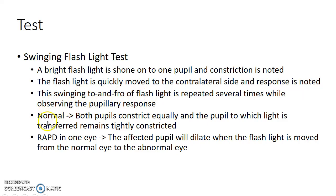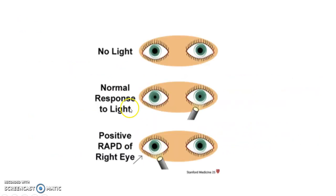In normal persons, both pupils constrict equally and the pupil to which the light is transferred remains tightly constricted. In case of RAPD in one eye, the affected pupil will dilate when the flashlight is moved from the normal eye to the abnormal eye.